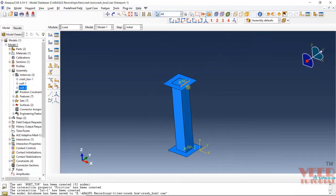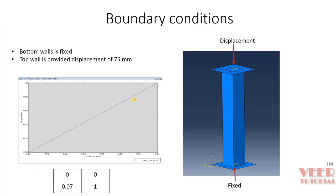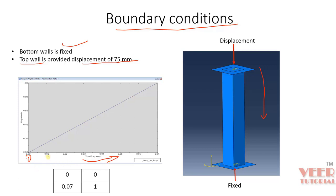For the top, we know that this point is going to move 75 mm in the vertical downward direction. In any explicit analysis, we need to define the displacement as a function of time. Here we are going to define the displacement as a linear function with respect to time. It means when the time is zero, the displacement is zero, and as time increases, displacement also increases linearly. For this, we need to define a tabular amplitude — time zero with amplitude zero.